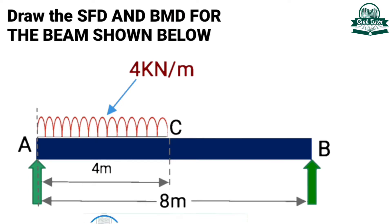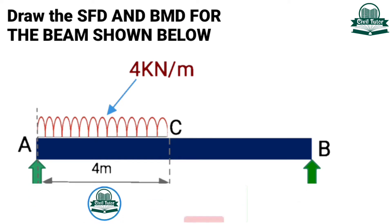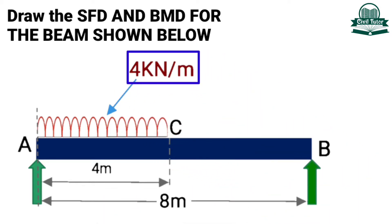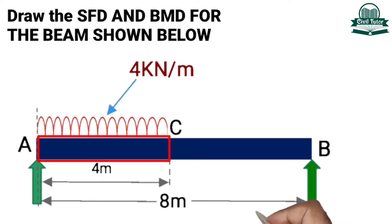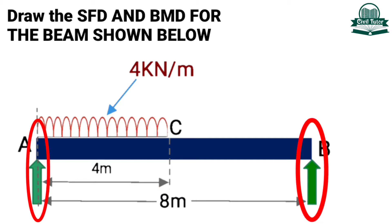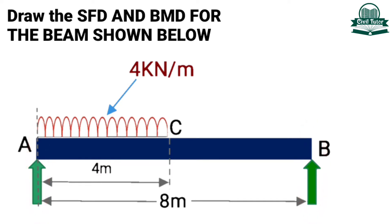I am back with another numerical on SFD and BMD for a simply supported beam carrying a UDL of 4 kN per meter over a span of 4 meter. The total span of the beam is 8 meter as shown in the figure. We are going to find out the support reactions first, and after that we will calculate the values of SFD and BMD and draw the diagrams accordingly.